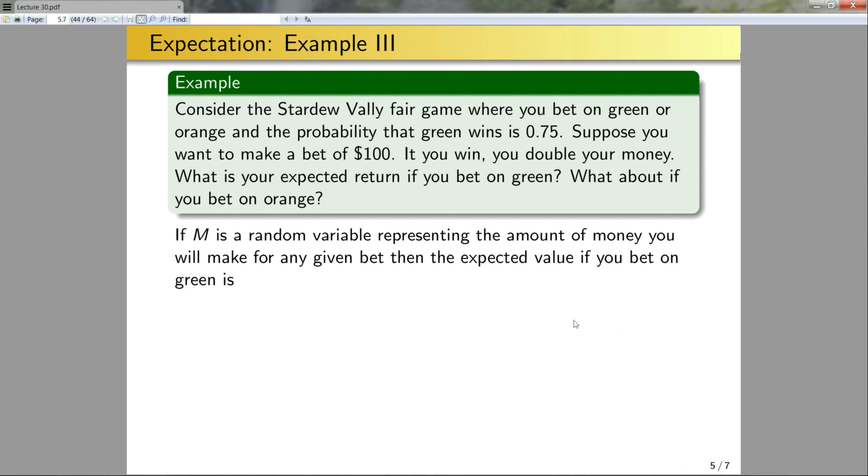Well, then the expected value if you bet on green will simply be the expected value of M, which will be $200 times 0.75 plus 0 times its probability. So in this case, it's $150 is the expected amount of money we expect to get back if we bet 100. Now, if I bet on orange, the expected value will simply be this thing here where I have 0 for green and 200 for orange, and in this case, I get 50. So here, it's a good idea to always bet green as opposed to betting on orange.